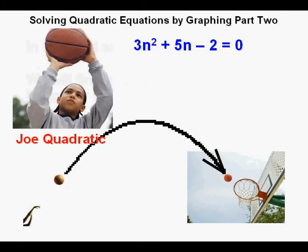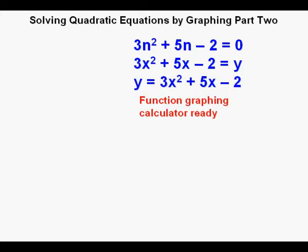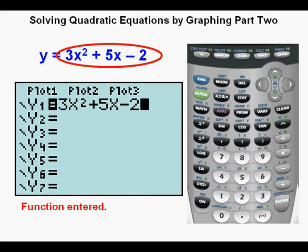Earlier we graphed quadratic equations and found integer solutions with the graphing calculator. In this portion, we will show how to find non-integer solutions to quadratic equations. We address the equation n squared plus 5n minus 2 equals 0 — the first equation Joe tried in the introduction to quadratic equations lesson. Step 1 is already done, so we go to step 2 and change the quadratic equation into a quadratic function to graph it. He changes the zero to y and the n to x, switches the dependent variable to the left side, and enters the function in y equals.